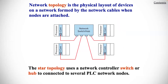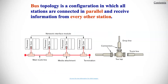Network topology is the physical layout of devices on a network formed by the network cable when nodes are attached. The STAR topology uses a network controller switch or hub to connect to several PLC network nodes. Bus topology is a configuration in which all stations are connected in parallel and receive information from every other station.